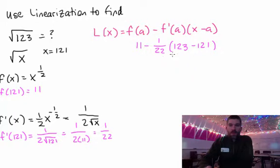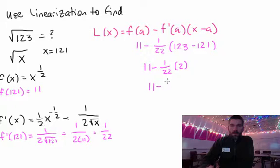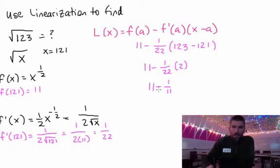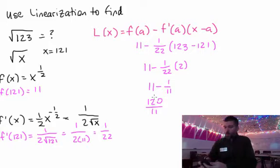So 123 minus 121 is two. So 11 minus 1 over 22 times two is going to be 11 minus one over 11, which is, as a fraction would be 120 over 11. Is that right?